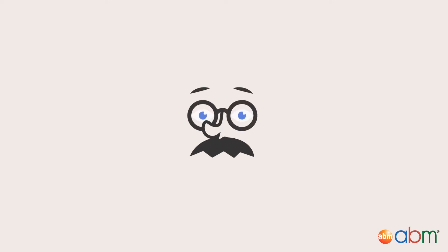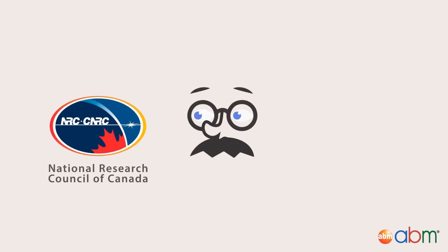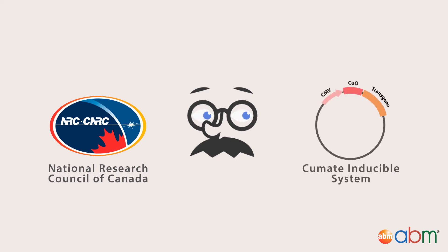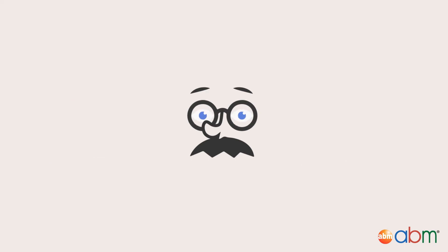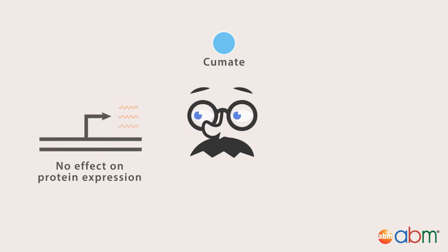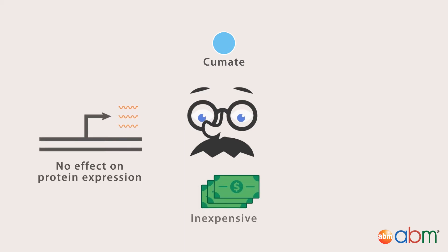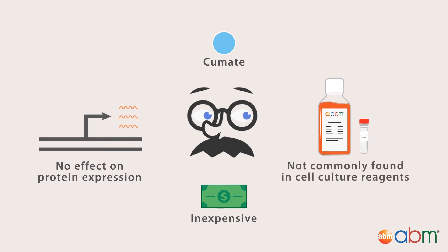To combat these problems, scientists at the National Research Council of Canada have developed the cumate inducible system. The inducing element for this system is cumate, a small, non-toxic molecule that can be added directly to the culture medium. Cumate is an excellent inducer since it has no significant effect on a cell's protein expression, is inexpensive, and is not found in commonly used cell culture reagents.